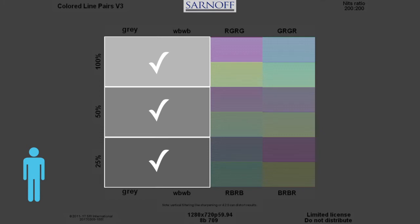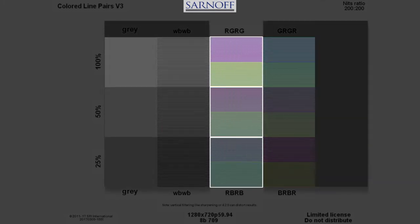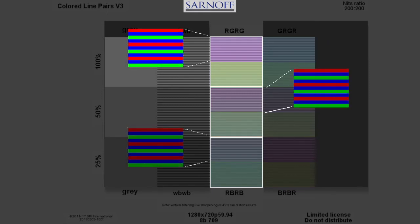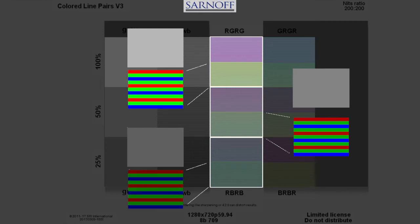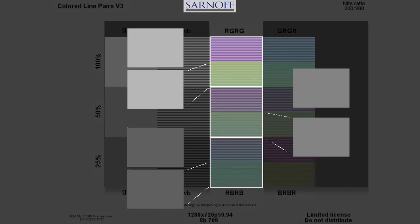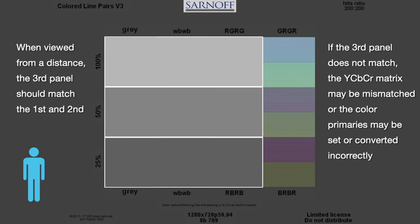If the second panel matches the first panel, then the third panel can be checked. The third panel is split into top and bottom sections. The top is alternating lines of red and green over a blue background; at a distance, it will appear gray. The bottom is alternating lines of red and blue over a green background and should also appear gray. The third panel should match the first and second panels. If not, the YCBCR matrix may be mismatched or the color primaries may be set or converted incorrectly.